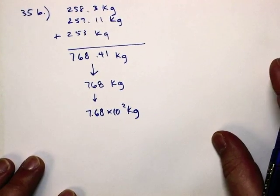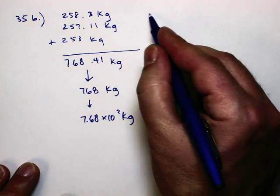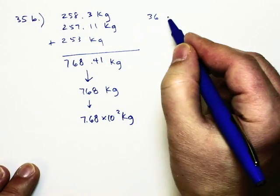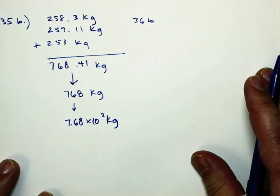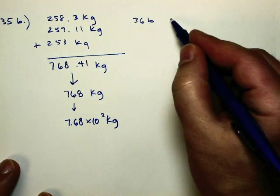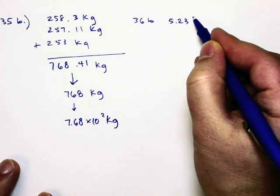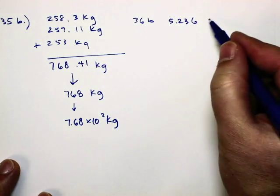That's 35B. Let's do 36B as well. This one's subtraction. And we got 5.236. Remember, everybody should be writing with me.